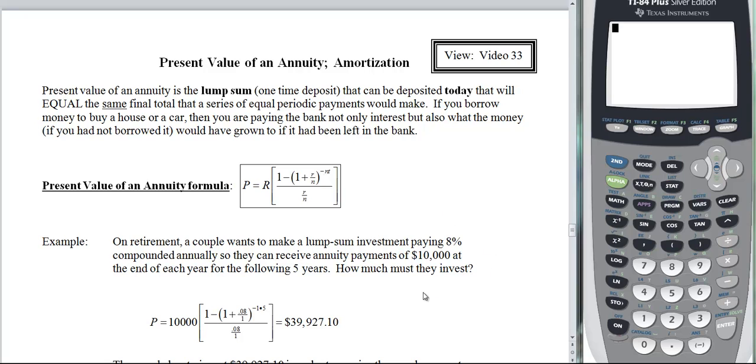So in this particular problem, it says on retirement a couple wants to make a lump sum investment. That's a P value. Paying 8% compounded annually so they can receive annuity payments of $10,000 at the end of each year for the following five years. How much must they invest? Now notice a lump sum investment so they can receive annuity payments of $10,000 at the end of each year. So lump sum, one time, that's my present value. And the R is series of payments.